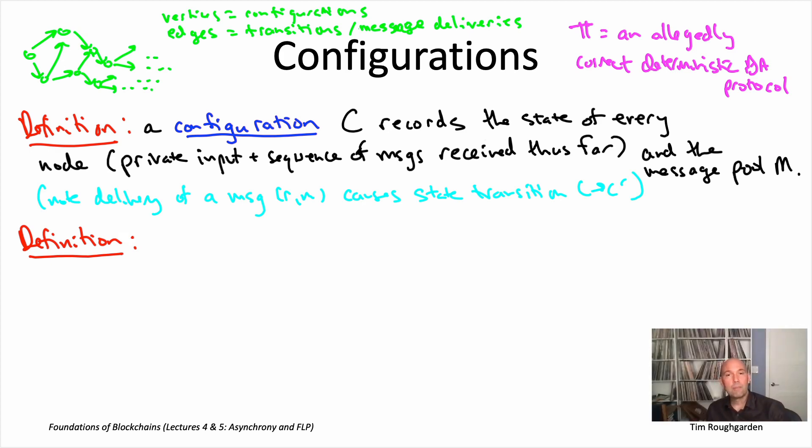Now, secondly, remember that π is assumed to satisfy agreement. And so that means upon termination, it must be the case that all of the honest nodes output the same value. So either they all output the value zero or all the honest nodes output the value one. Those are literally the only two possibilities for the final output of the protocol because the protocol is assumed to satisfy agreement.